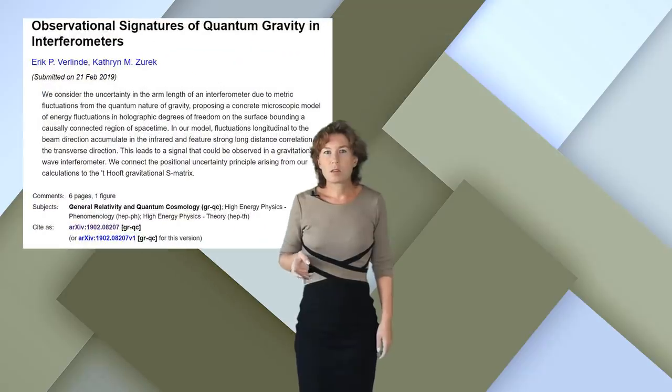Whether or not you buy the motivations for the holographic principle, you may want to know whether we can test it. The answer is definitely maybe. Earlier this year, Eric Verlinde and Katherine Zurek proposed that we try to test the holographic principle using gravitational wave interferometers. The idea is that if the universe is holographic, then the fluctuations in the two orthogonal directions that the interferometer arms extend into would be more strongly correlated than one normally expects.